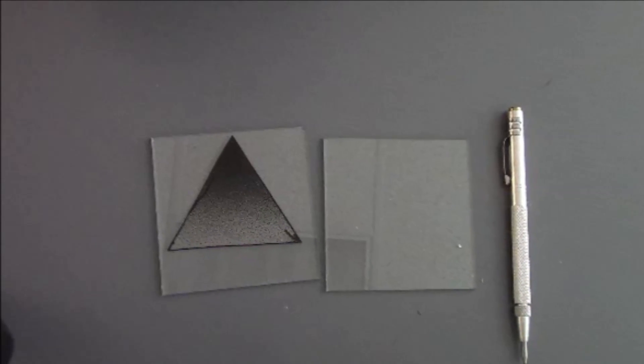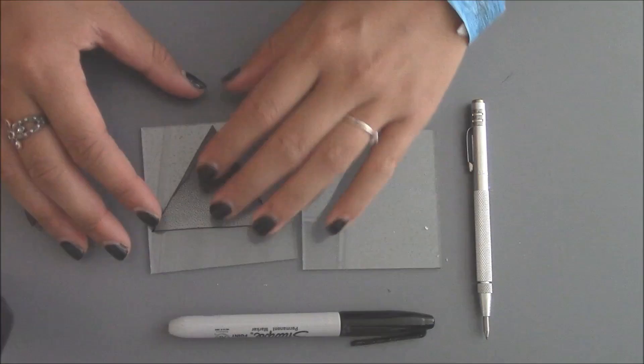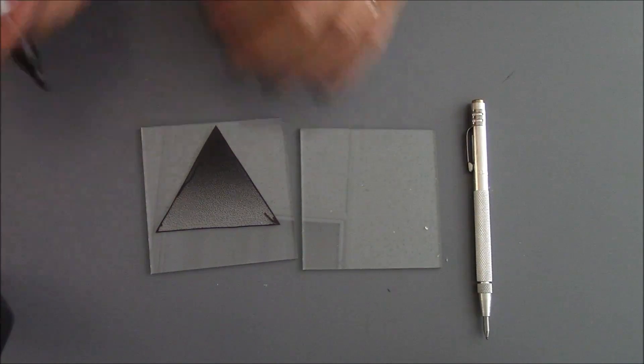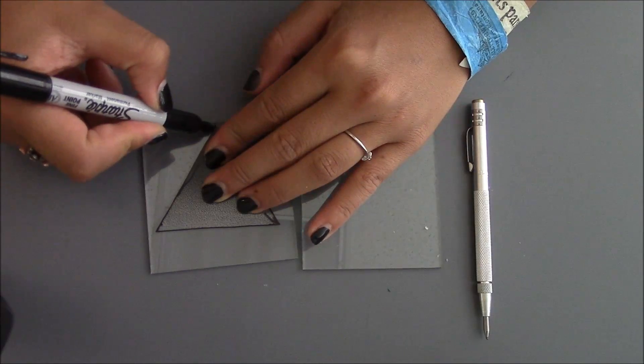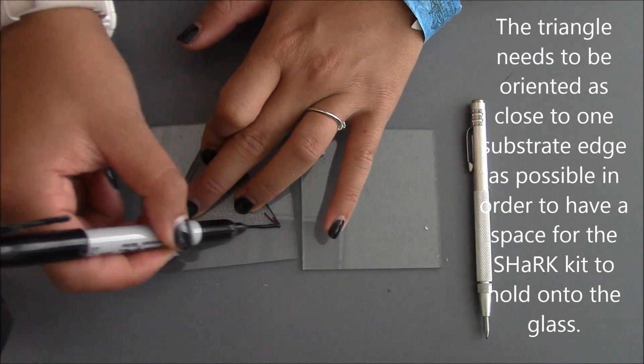Lay the template on a clean substrate. Make sure it is photoconductive side up. Position the triangle so that one tip of the triangle is as close to the edge of one side of the substrate as you can get without actually touching the edge. Trace the triangle onto the substrate with the Sharpie.